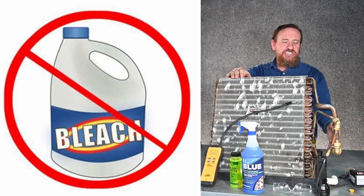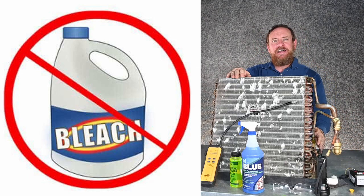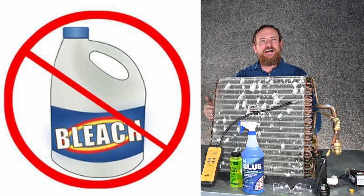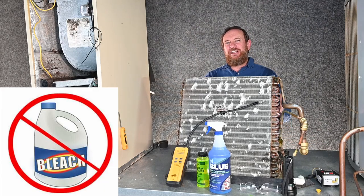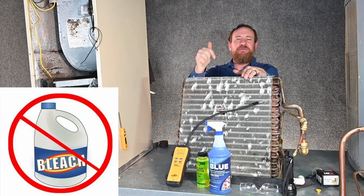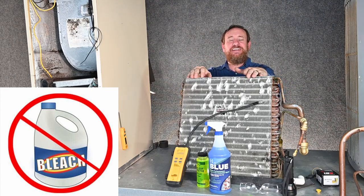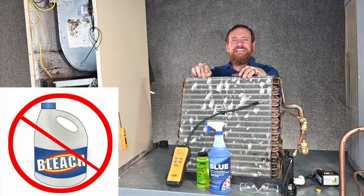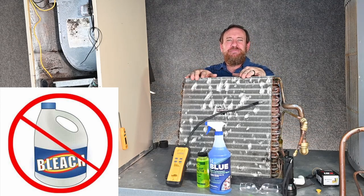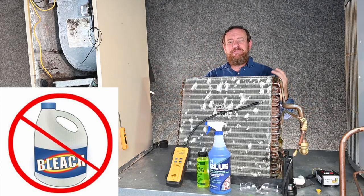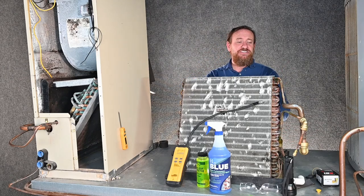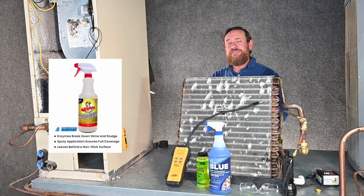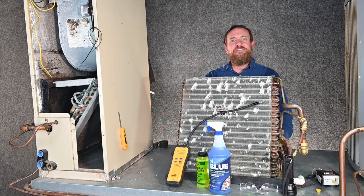Bleach is very corrosive. Even pouring it into the drain line means those vapors can come back up into the evaporator coil — and now you have copper, aluminum, galvanized metal, water, and bleach together. That bleach starts eating away the evaporator coil. When I go to a customer's house and smell bleach, there's a much higher chance it's going to be low on refrigerant. Please don't recommend customers put bleach in their unit — there are proper products made to clean drain lines.